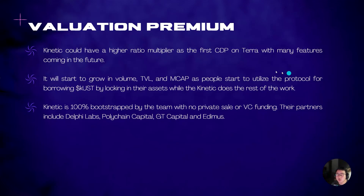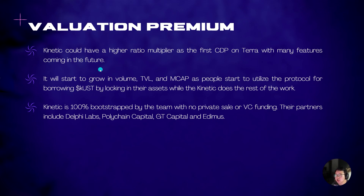Let's explore some of the valuation premiums. Kinetic could have a higher ratio multiplier as the first CDP on Terra with many features coming in the future. This means that the price range mentioned could be on the higher side, or even above the price range — going to $1 is actually not completely out of the question. It will also start to grow in volume, TVL, and market cap as soon as people start to realize the utility of this protocol for borrowing KUST by locking their assets.